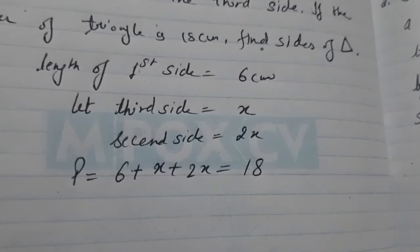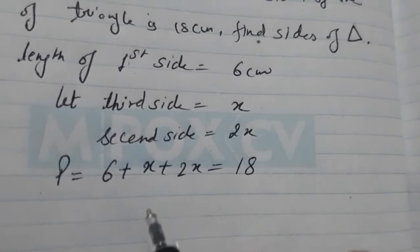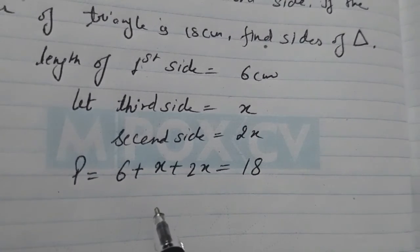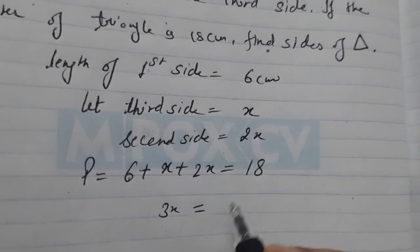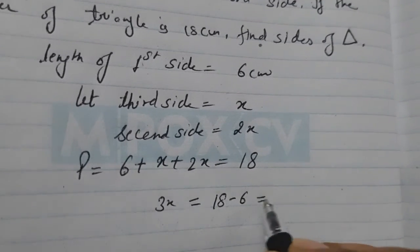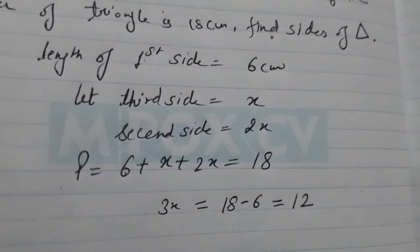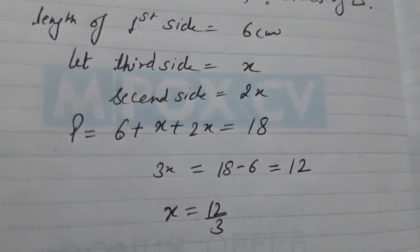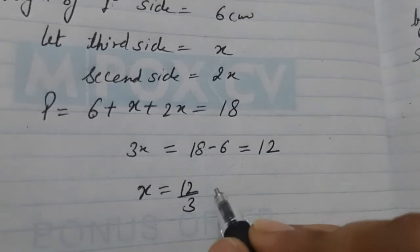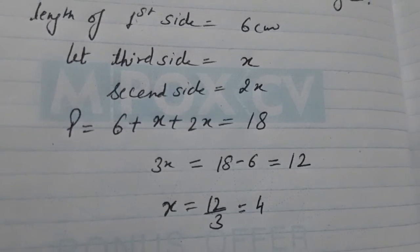From here, we can find out the value of X. 2X plus X, that is 3X. And, we will transpose this 6 to right side. It will become 18 minus 6. That is 12. Now, we will divide both sides by 3. 12 divided by 3, that comes out to be 4.